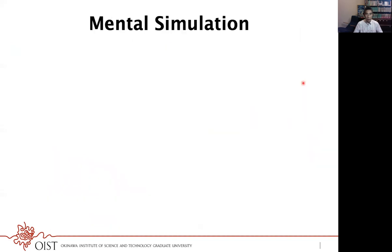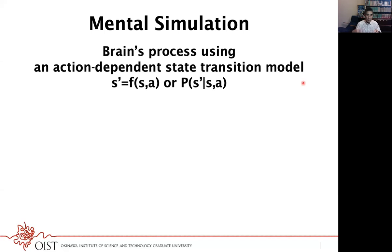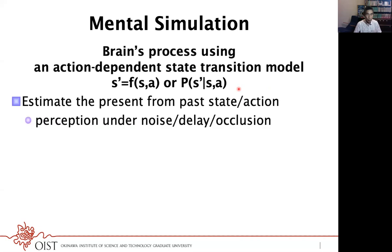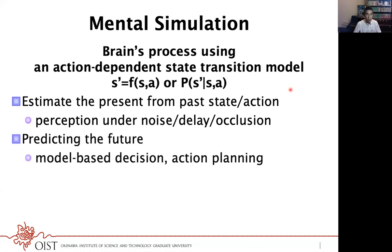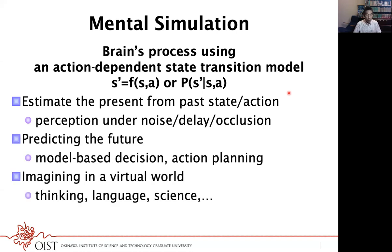When we use language for very simple words like 'watch out' or 'take care,' we simply react. But usually we imagine the situation the speaker is in from the language and then produce the correct behavior. This requires some kind of mental simulation, which is a process based on the action-dependent state transition model. Such mental simulation is helpful for estimating the current state from past state and action, planning the future, or imagining a virtual situation — which is probably very important for language communication.